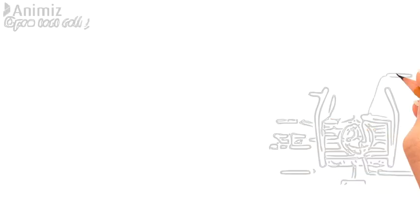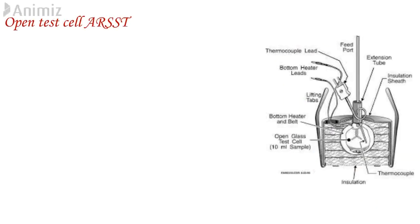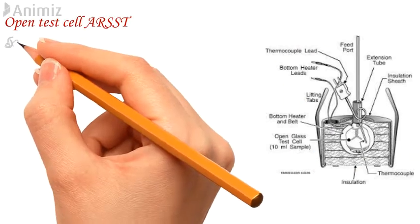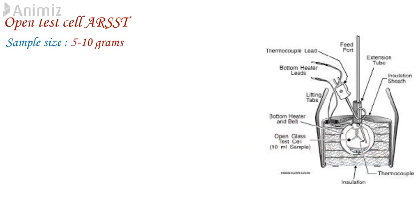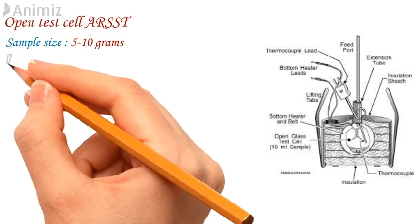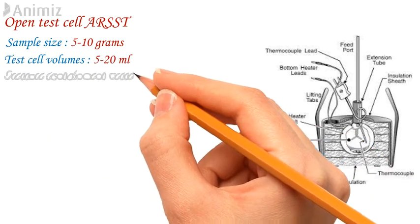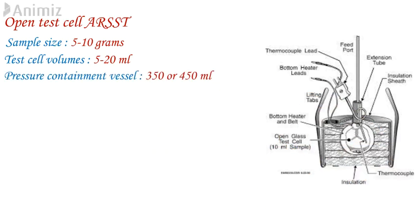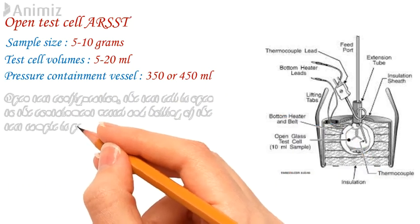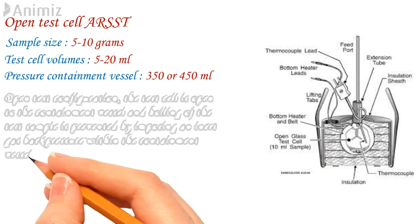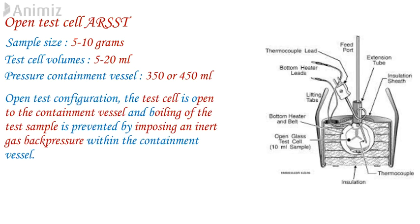Open test cell methodology: ARSST typically uses a relatively small yet representative sample size of 5 to 10 grams in a lightweight glass test cell with a volume of approximately 10 ml, though 5 ml or 20 ml test cells are sometimes used. The test cell is outfitted with a belt heater and installed in a 350 ml or 450 ml pressure containment vessel. In the open test configuration, the test cell is open to the containment vessel, and boiling of the test sample is prevented by imposing an inert gas back pressure within the containment vessel.